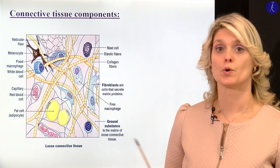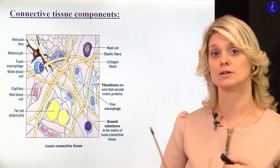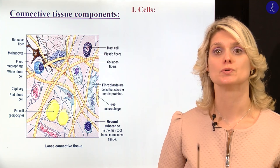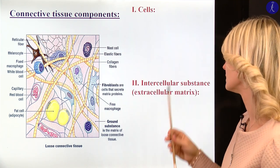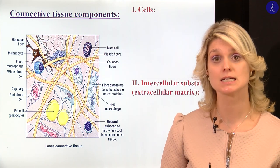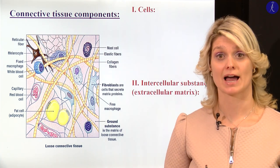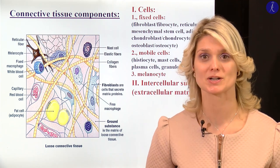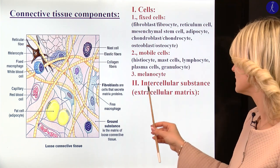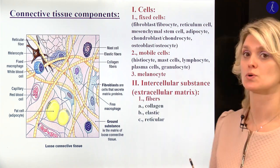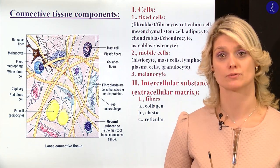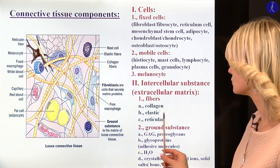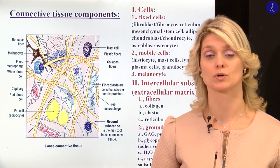Now I would like to go back to the original picture to show you again the main compartments of the connective tissue. We showed the cells — within the cell, we have the fixed and the mobile cells. I hope this is not boring for you, because it is a really important question in the exam. Within the intercellular substance, we showed the fibers: the collagen fibers, the reticular fibers, and the elastic fibers.